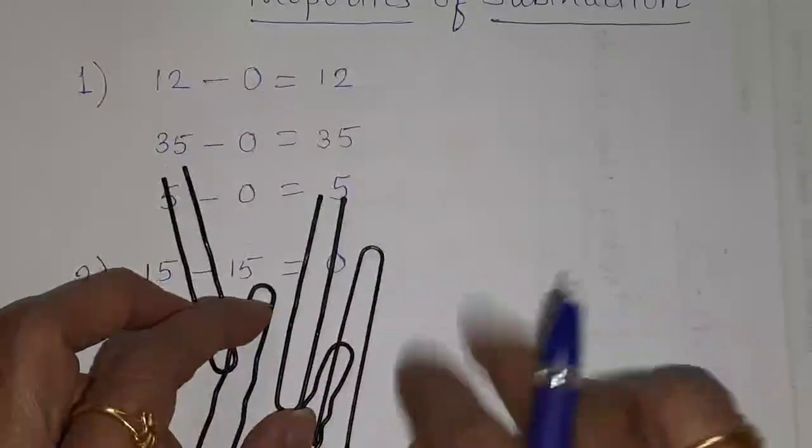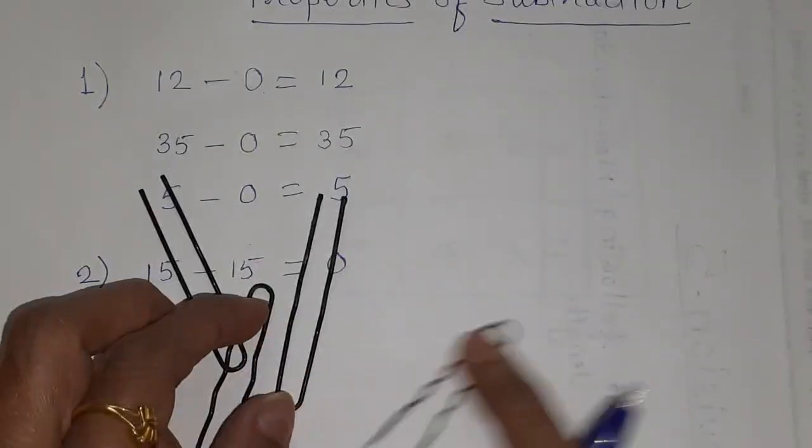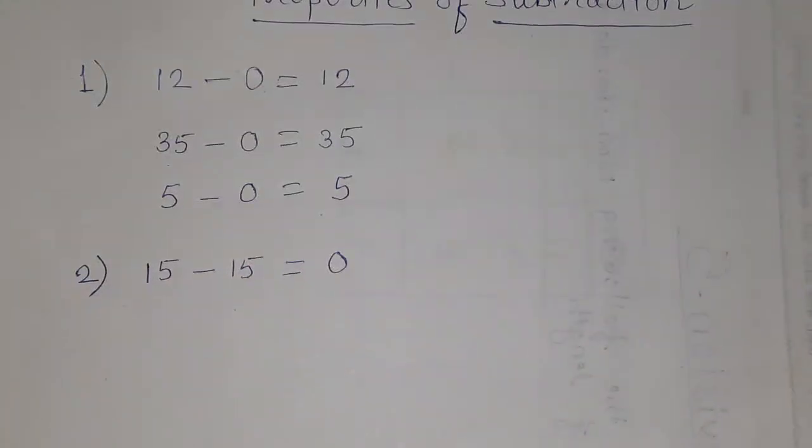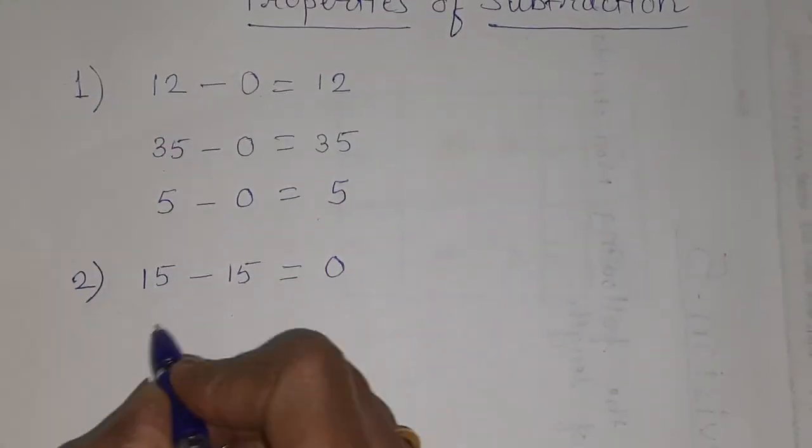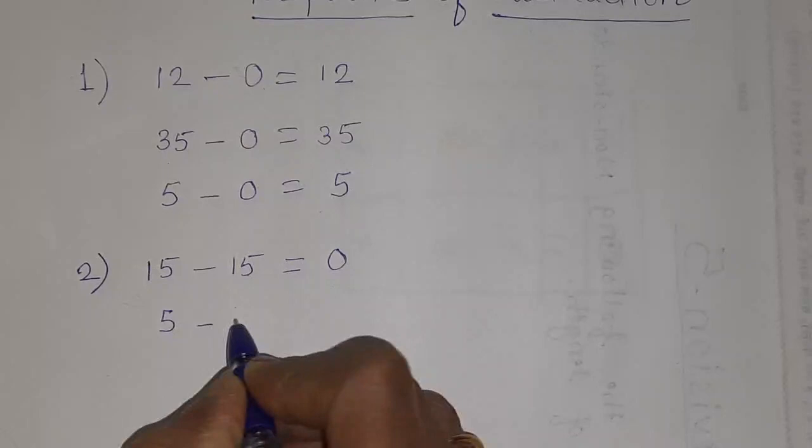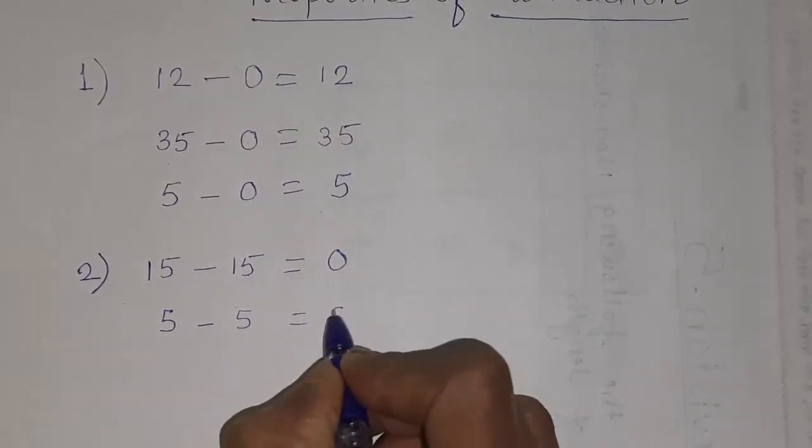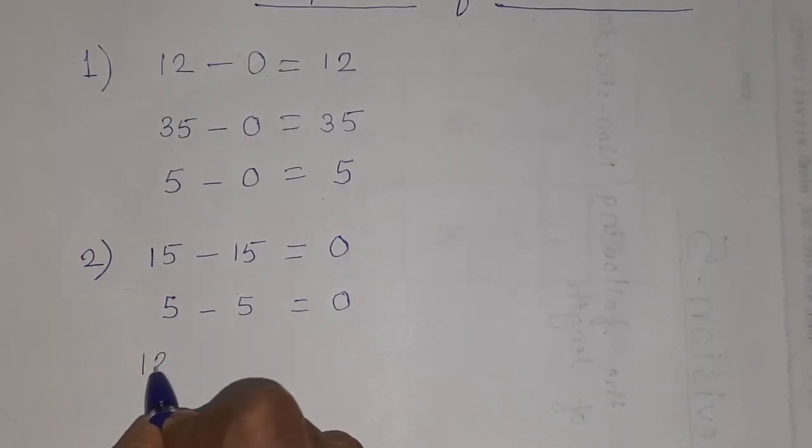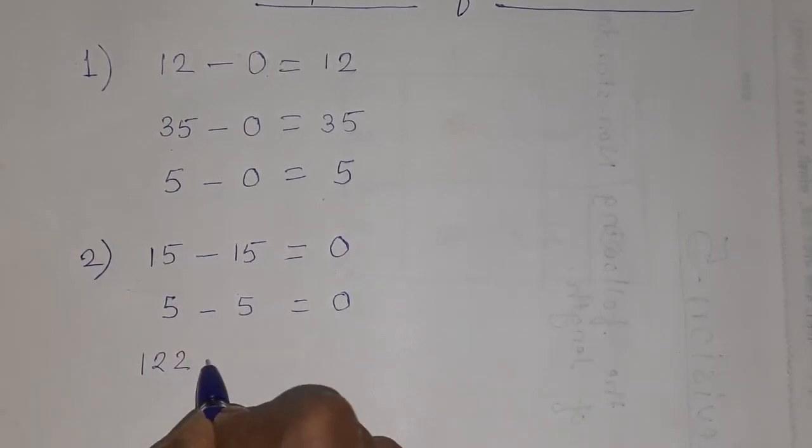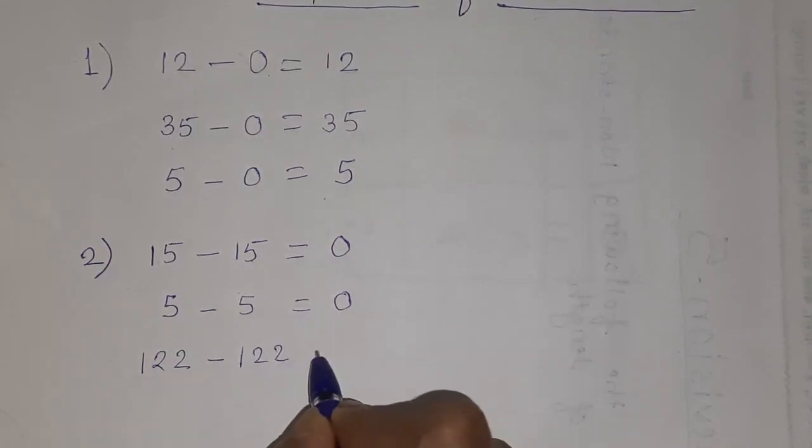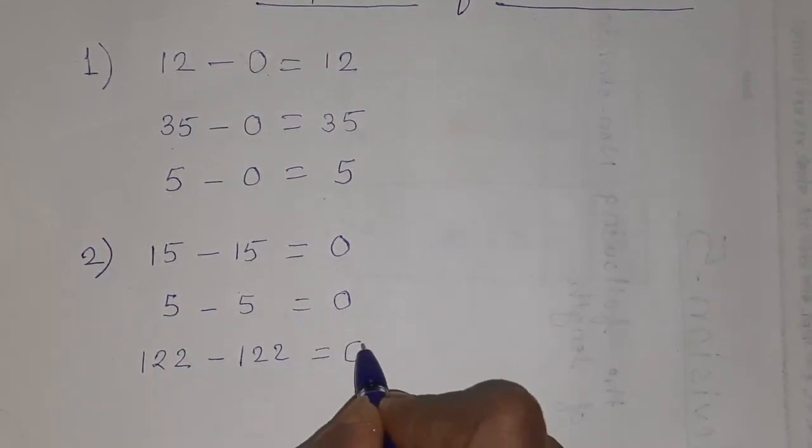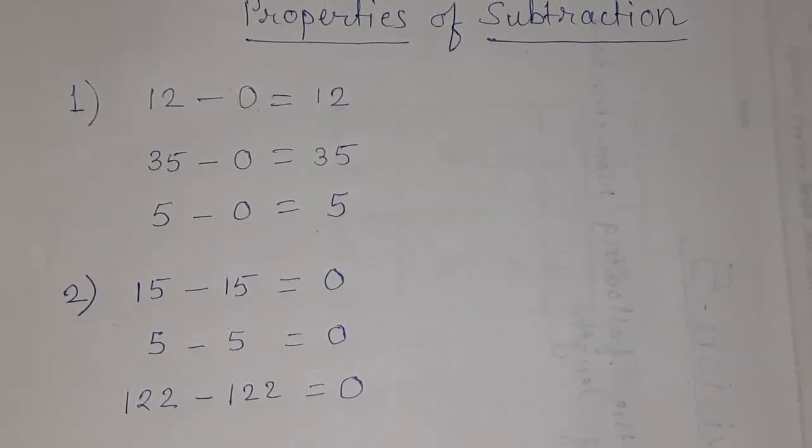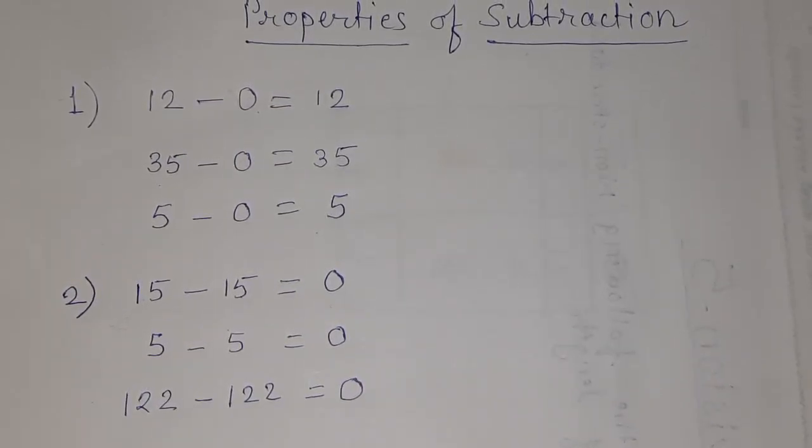And remove all 5 pins. So, 1, 2, 3, 4 and 5. So, what do we get? Nothing. So, 5 minus 5, we are getting 0. If you are taking a bigger number also, 122 minus 122, you are getting the answer 0. So, these two properties are there that we are going to see in the sentence.